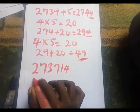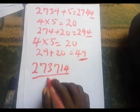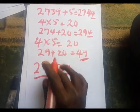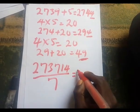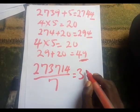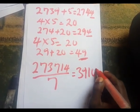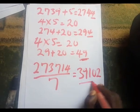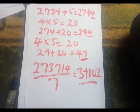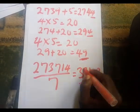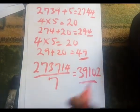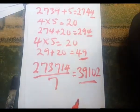Therefore, 273,714 is also divisible by seven, and the result is 39,102. I hope this video helped — thank you.